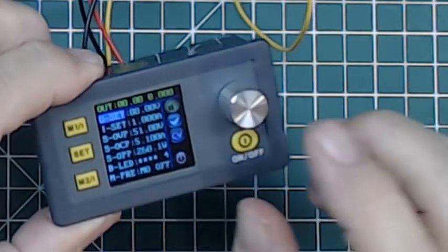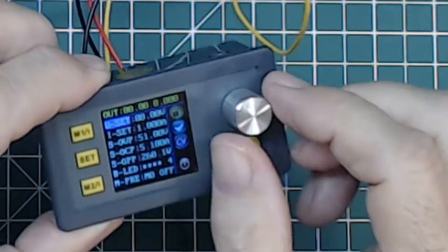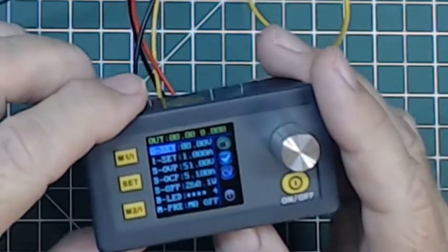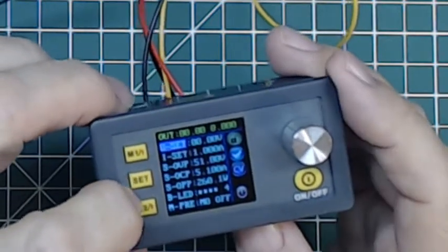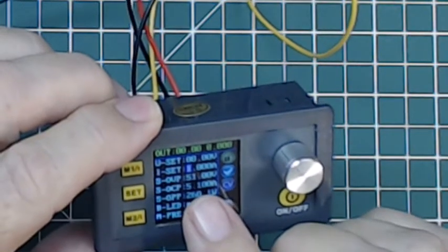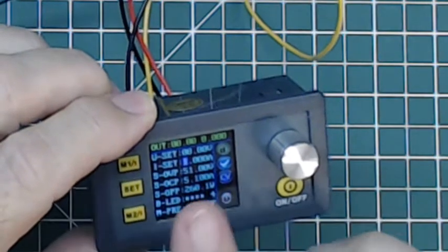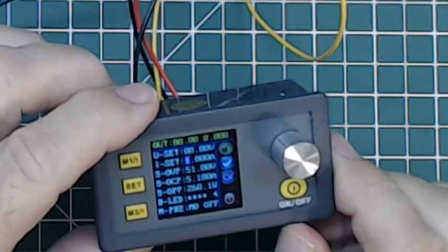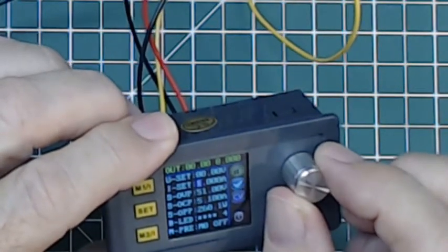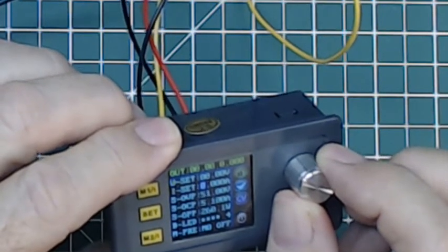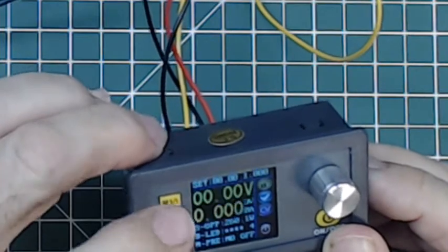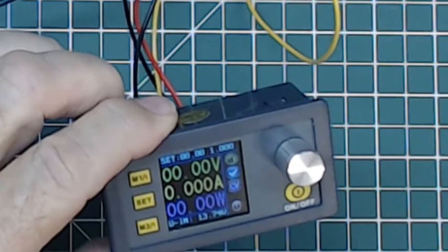You use these buttons here to select the item you want to change. For instance, if I wanted to change the current limiting, I go down to current, then push this button once and it selects the ones digit. Push it more and it'll go over and select different digits, so I could set it to 1.54 if I wanted to. Use this knob to change it. Right now I have it set to 1 amp, which is where I want it. I hit the set button again and now it's set the output current to a maximum of 1 amp.